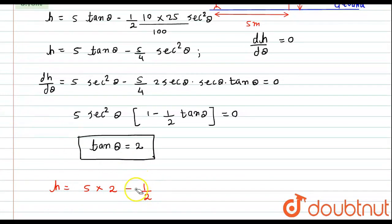The required height h will become equals to 5 into tan theta is nothing but 2 minus 5 divided by 4. In the place of sec² theta, I can write 1 plus tan² theta. This implies 5 into 2 minus 5 divided by 4, in bracket 1 plus 2² will be nothing but 4.